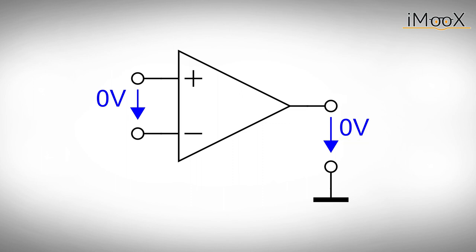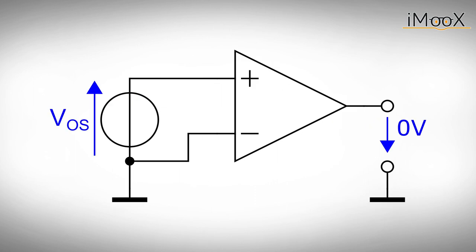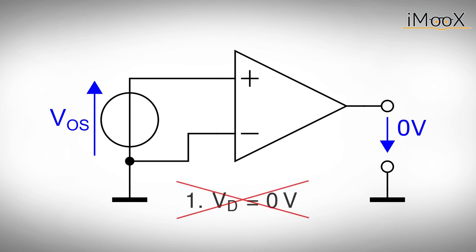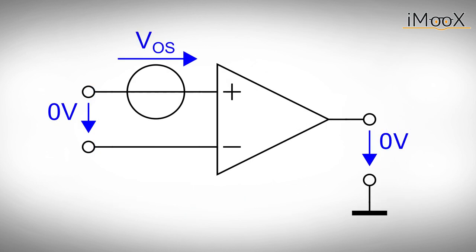If we experiment with a real operational amplifier, we will see that the output is not zero volts as we wished for. The effect is caused by the not perfectly symmetric differential input stage of our operational amplifier. In order to force the output voltage to zero volts, we have to apply a certain voltage between the two inputs. The voltage we have to apply is called the offset voltage Vos. If we consider the offset voltage for negative feedback amplifiers, we no longer can apply the first rule, which states that the differential input voltage is zero volts. To circumvent this problem, we use a little but powerful trick called modeling.